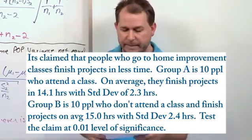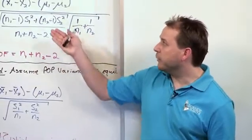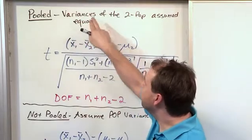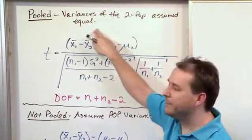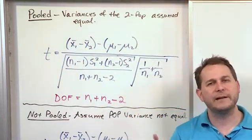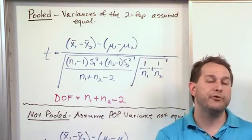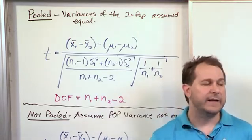So then the next question is, which one of these are we going to use? Are we going to use pooled or not pooled? Alright, so in this case it means that we assume that the variances of two populations are equal. Now what populations are we talking about? We're talking about the population of people who do a home improvement project and they've taken a class.